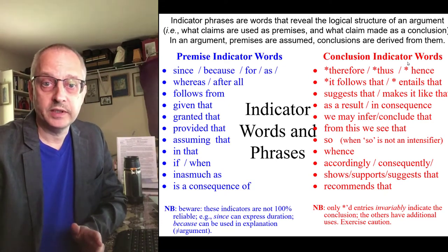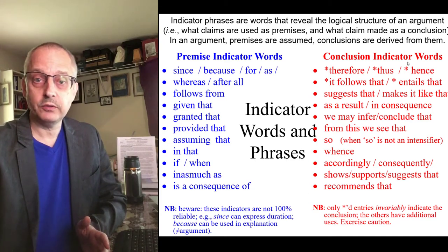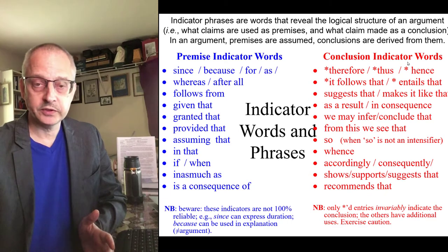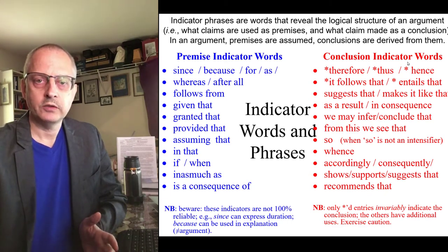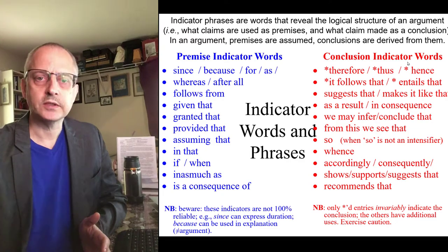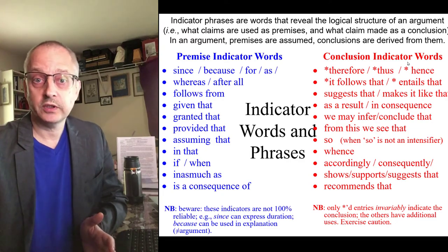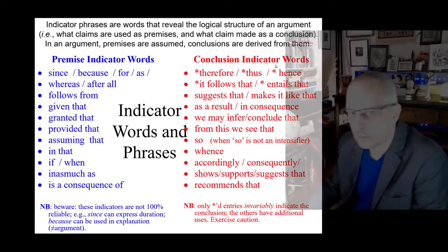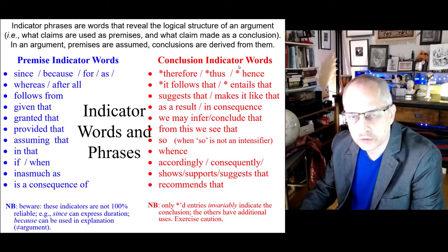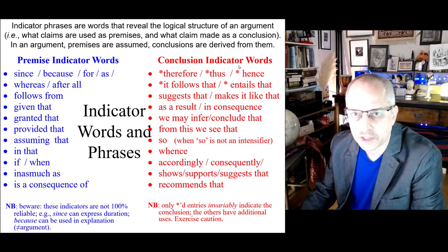To know what the argument is, you have to know what the premises are and the conclusion. That's all that an argument is — a bunch of premises and a conclusion. So how do you figure out, of all the statements in the passage, which ones are the premises and which is the conclusion? One thing that can help a lot are indicator words — conclusion indicator words and premise indicator words.